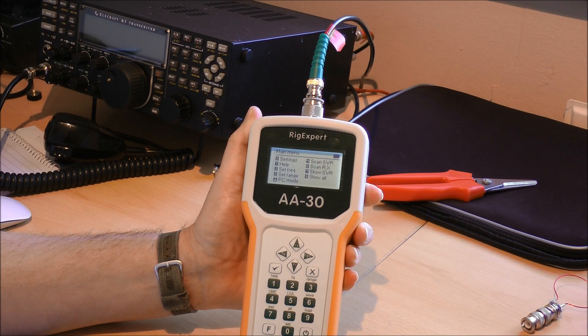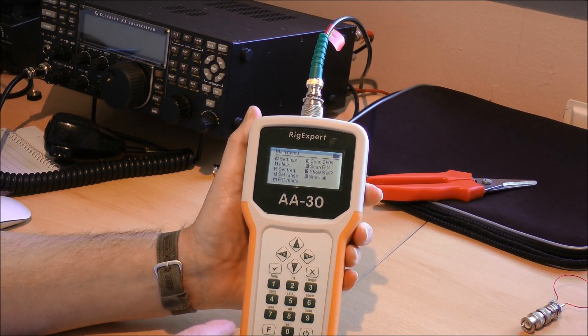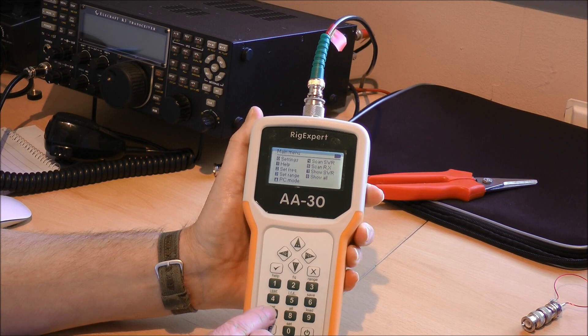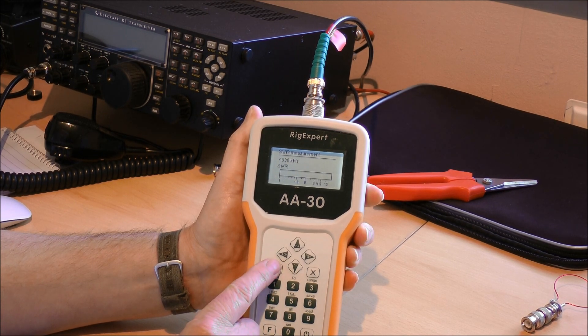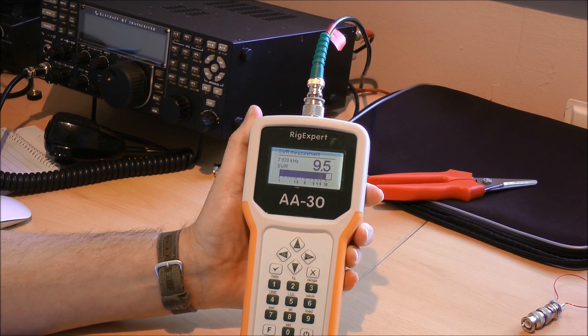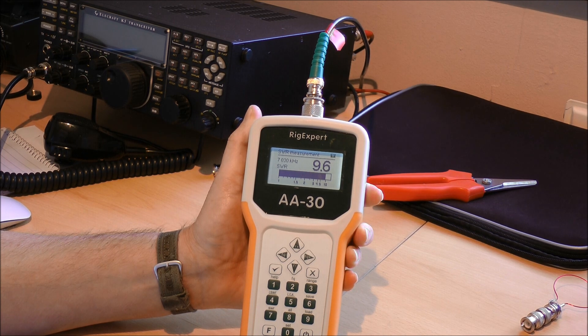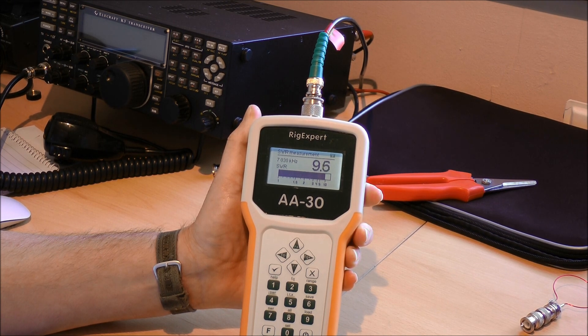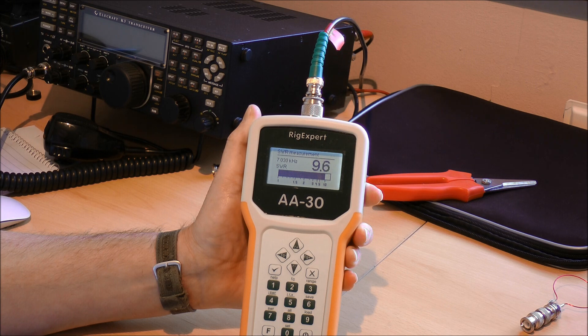I can do a spot check on the SWR by pressing button 7 and then the tick or the OK button. Currently that's pretty bad, it's 9.5 to 1, so I've got an issue there.